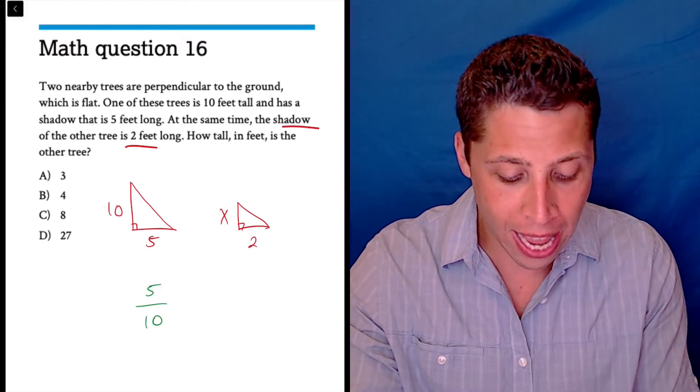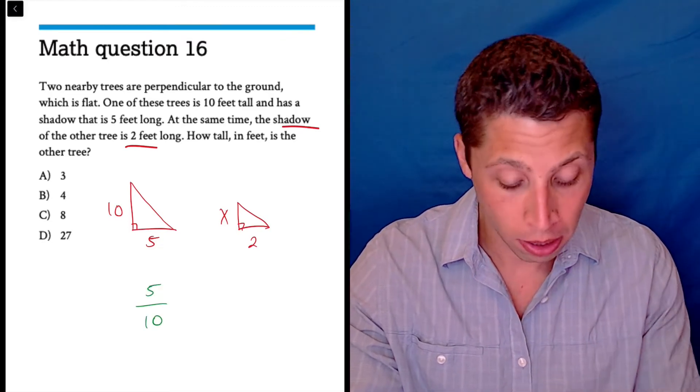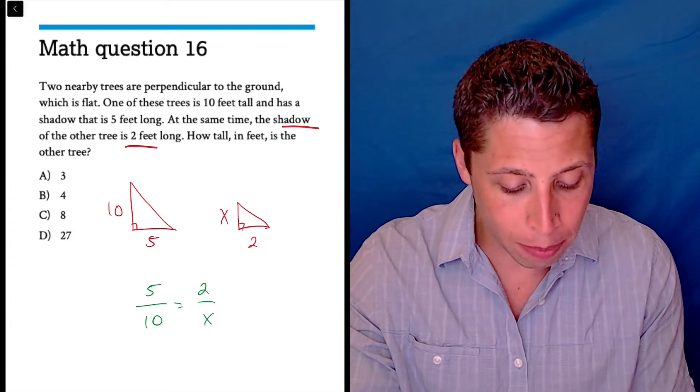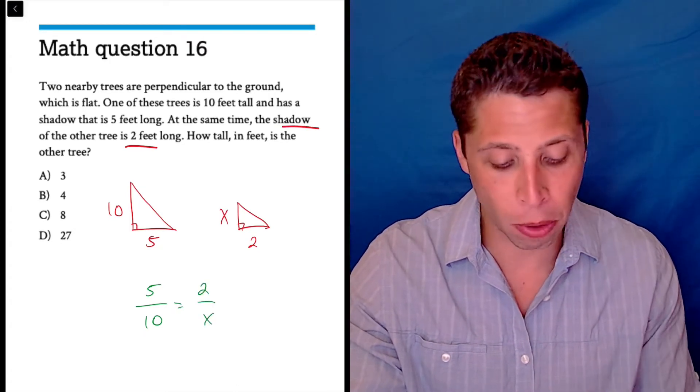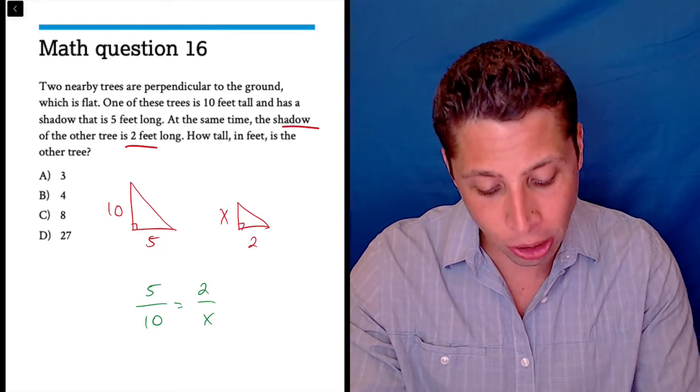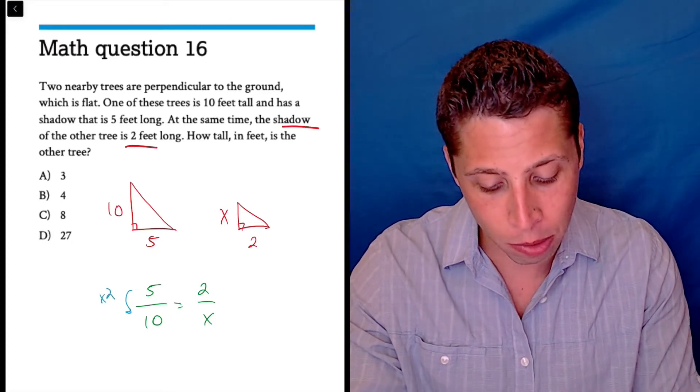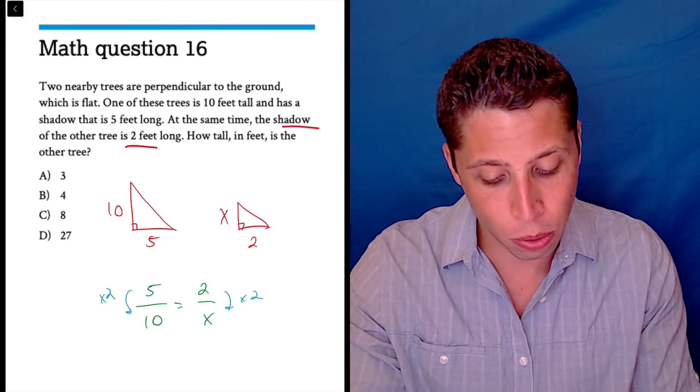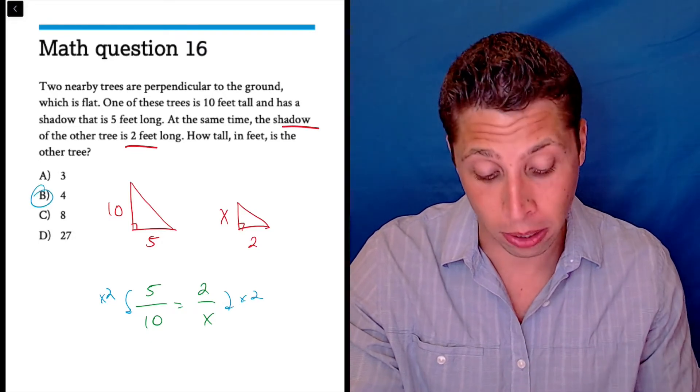So the 5 and the 10 are comparable and the 2 is going to match with the x. We can do some cross-multiplying here, but we might even just be able to see that the relationship is doubling, times 2 times 2, so 4 is my answer here. That's it.